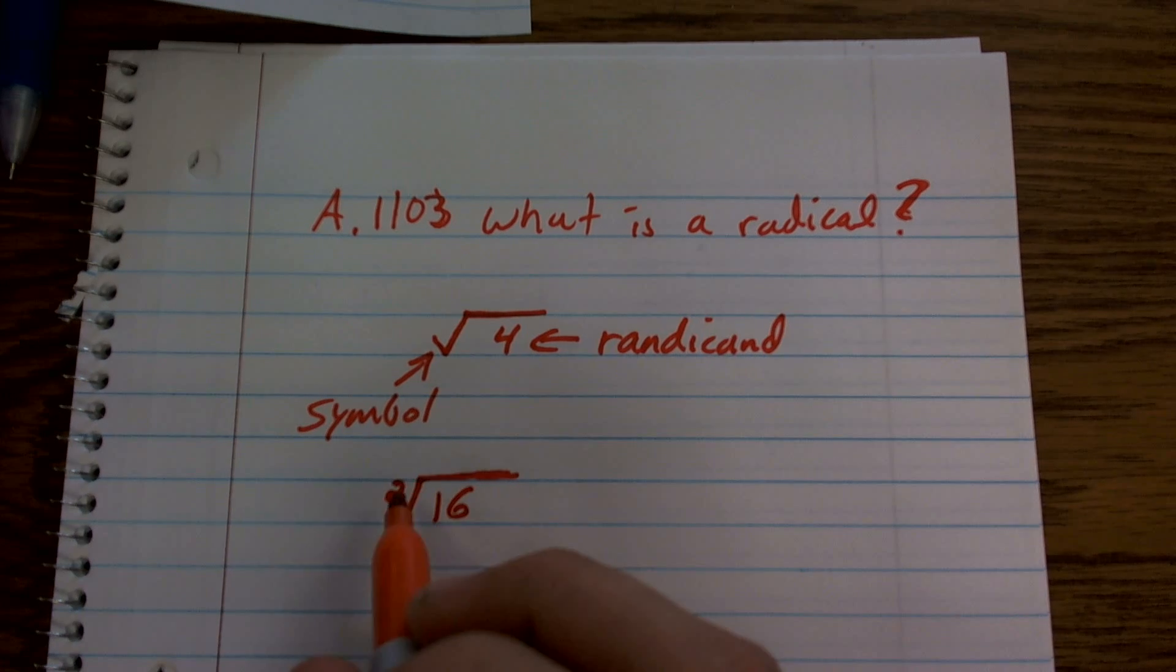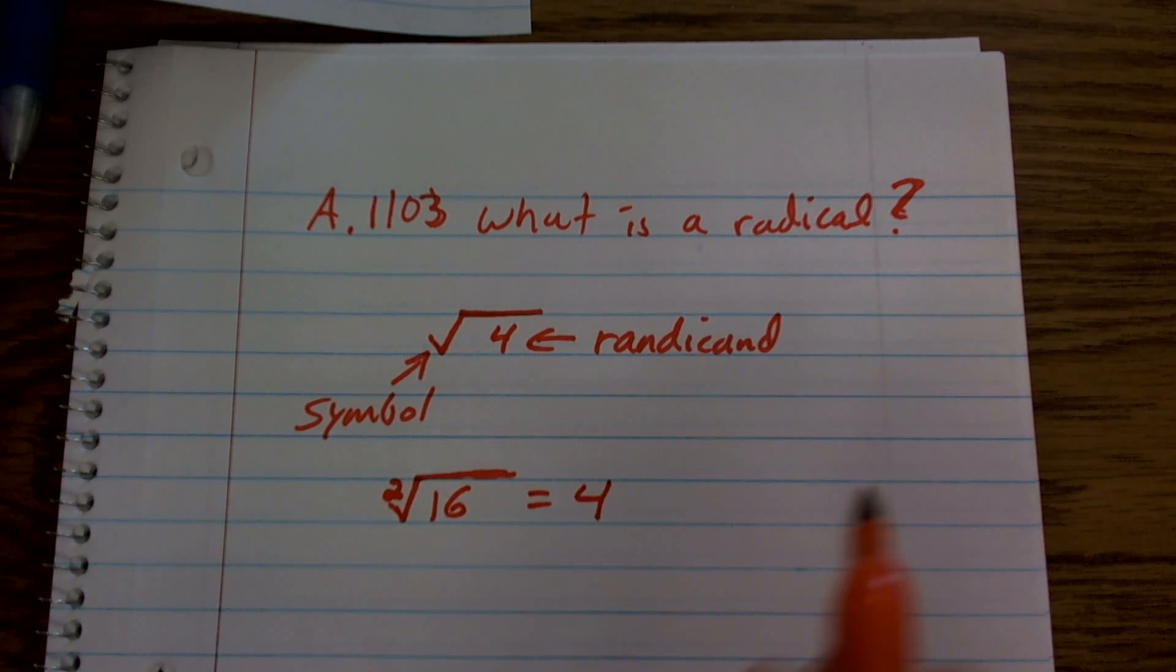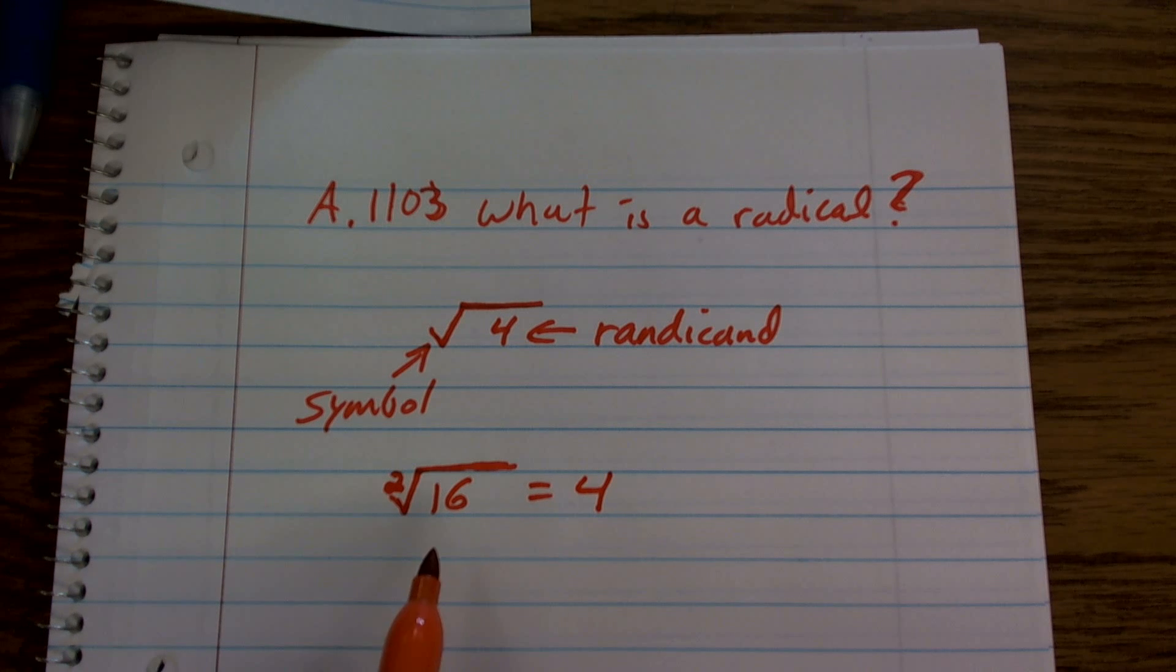So therefore, the square root of 16 equals 4. Now, however, this is like our basic model, so a lot of times we just omit that 2 because this is what we just call the square root symbol.